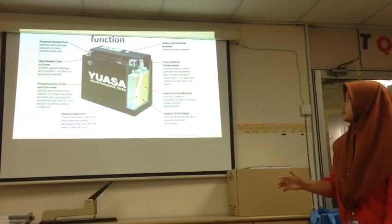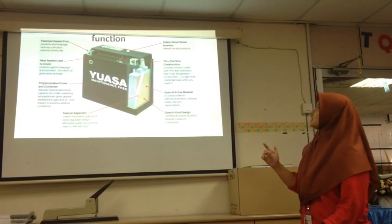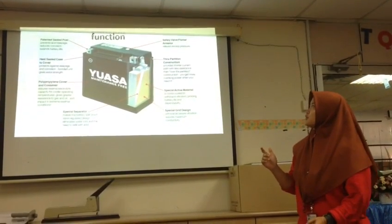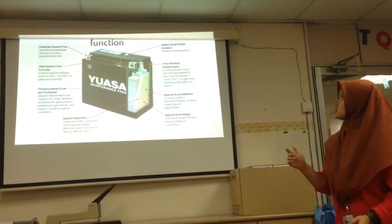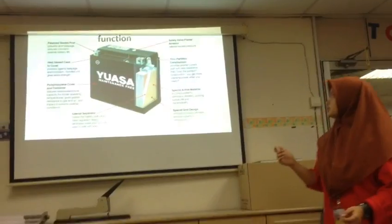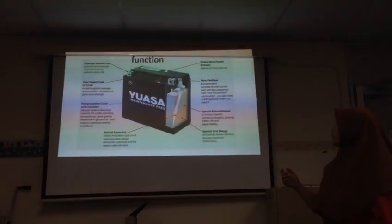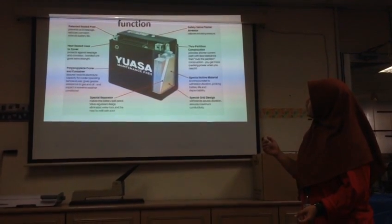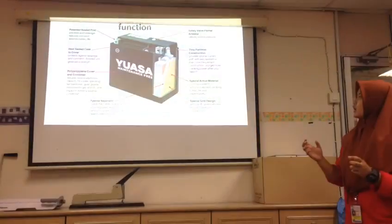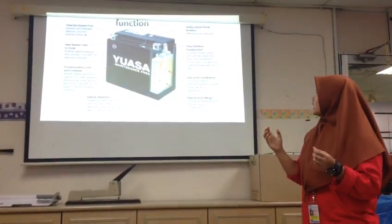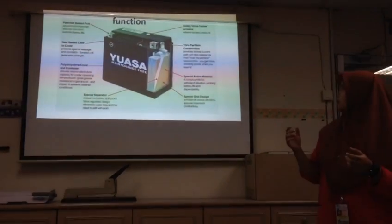So the function is: first of all, pattern cells post which prevent acid seepage and corrosions. Heat cells cast to cover, protect against seepage and corrosions. For polypropylene cover and container, which makes the box — we can resume electrolyte capacity for cooler operating.